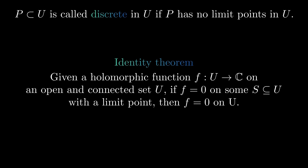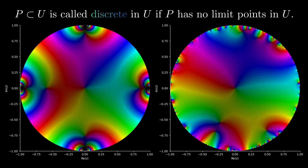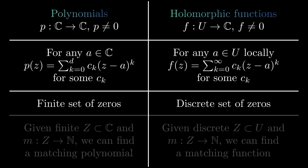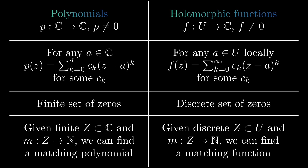Notice, however, that the zero set of a holomorphic function can have limit points outside of the domain. For example, we can have a holomorphic function on the unit disk with zeros that have limit points on the boundary of the unit disk. Finally, given any finite set and for each point in that set a multiplicity, you can find a polynomial which has exactly those zeros with matching multiplicities. The same statement holds for holomorphic functions when we replace finite by discrete — this is known as the Weierstrass Factorization Theorem.